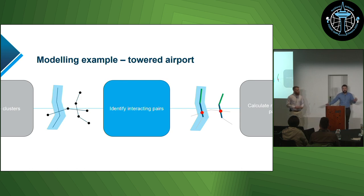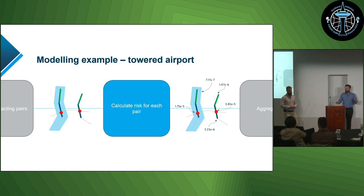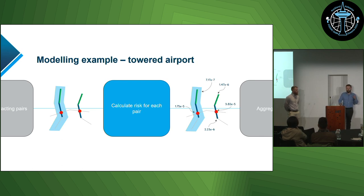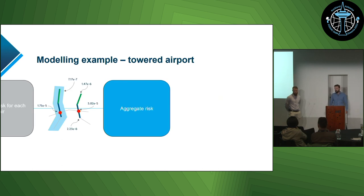Now we can actually calculate some risk. Without getting into the nuances of the risk formula, at a high level it involves representing aircraft positions in space and time using Laplace distributions and then calculating the probability of overlap between them. We also account for factors such as the speed of each aircraft, the approach angle, and a few other factors. We also calculate collision risk within each cluster, which takes care of the risk of aircraft following each other. The final step is to aggregate all those individual risks together, giving us a final risk estimate for the airspace.